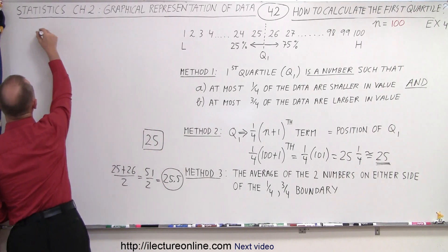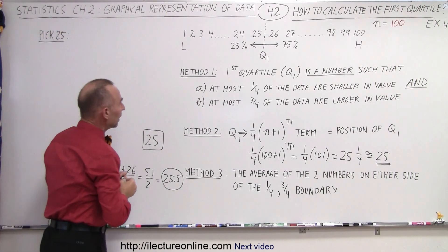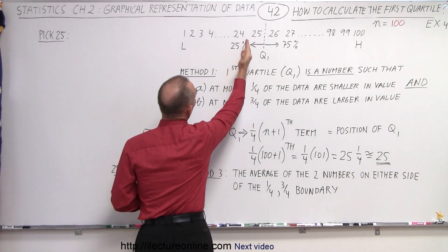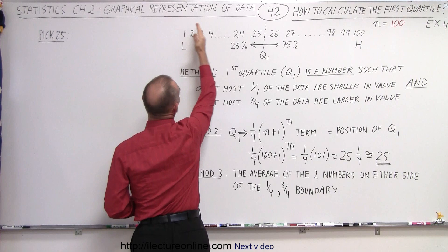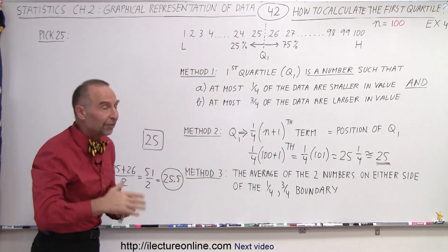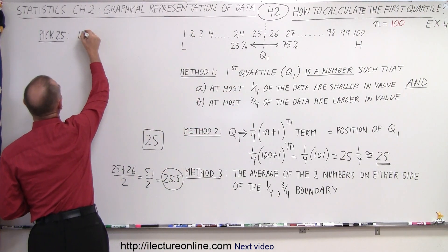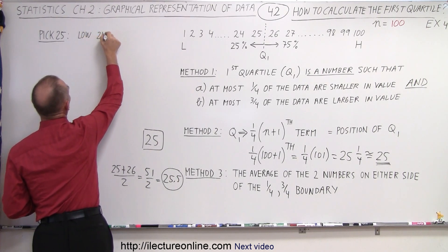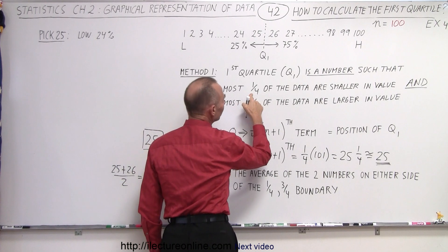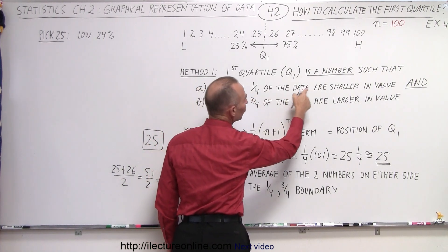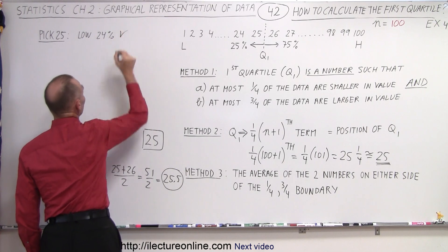Let's first pick 25. We look to the left of 25 — from 24 downward — and that means we have 24% of our data points to the left of the point we picked. The rule is that at most one-quarter, which is 25%, of the data are smaller in value. We have 24%, so that checks.